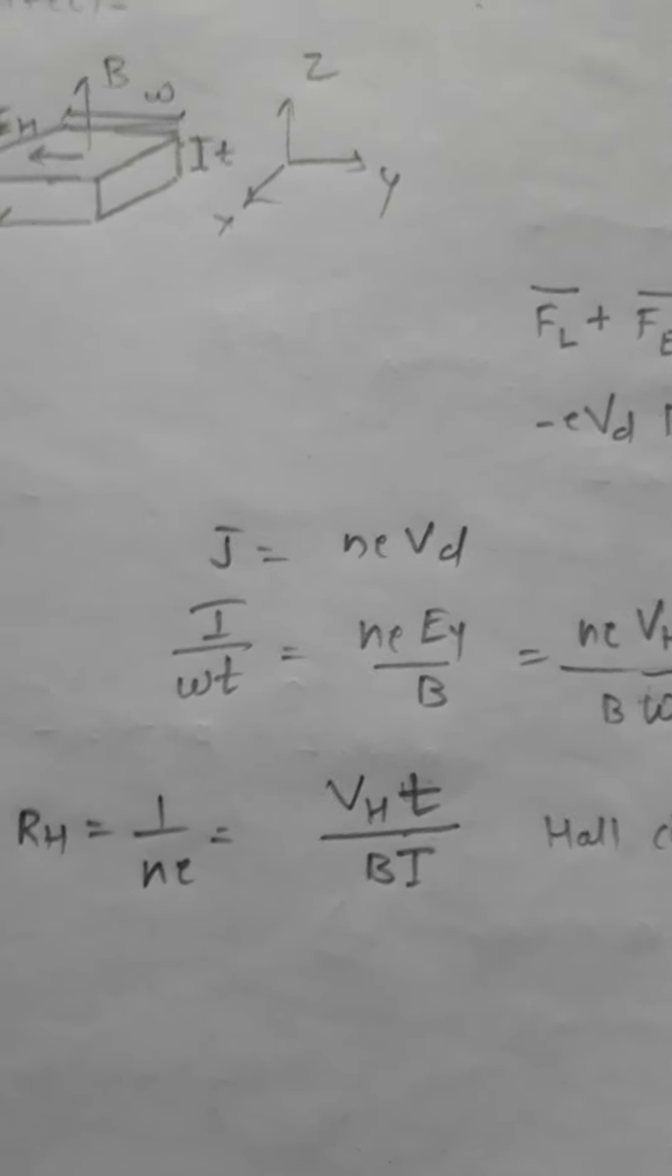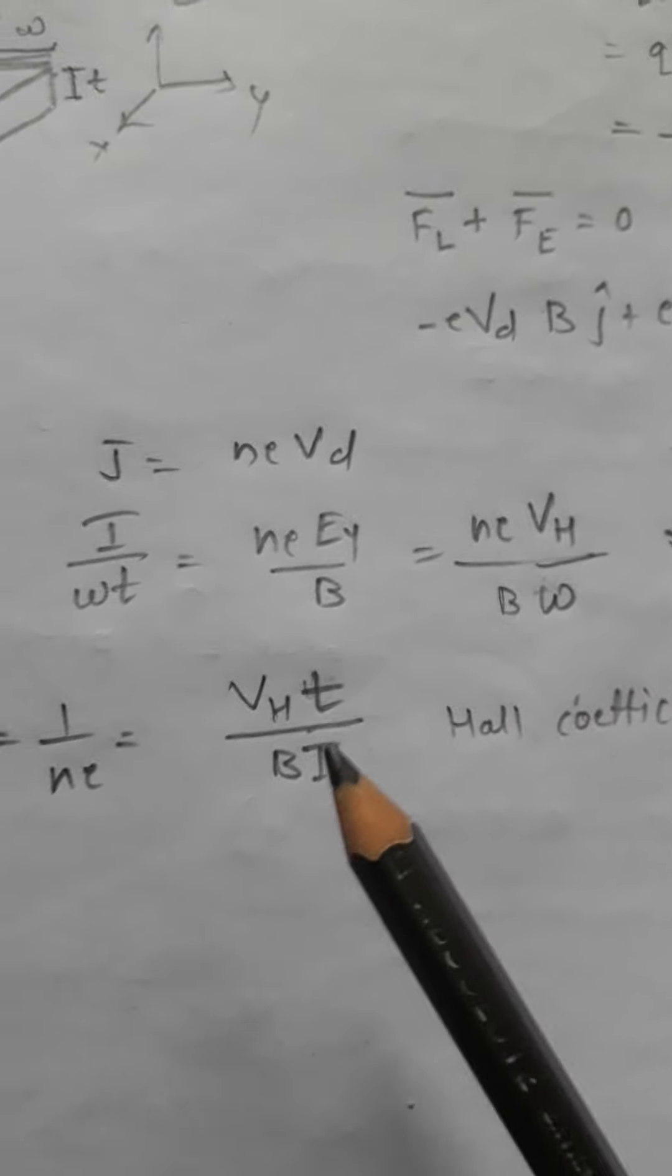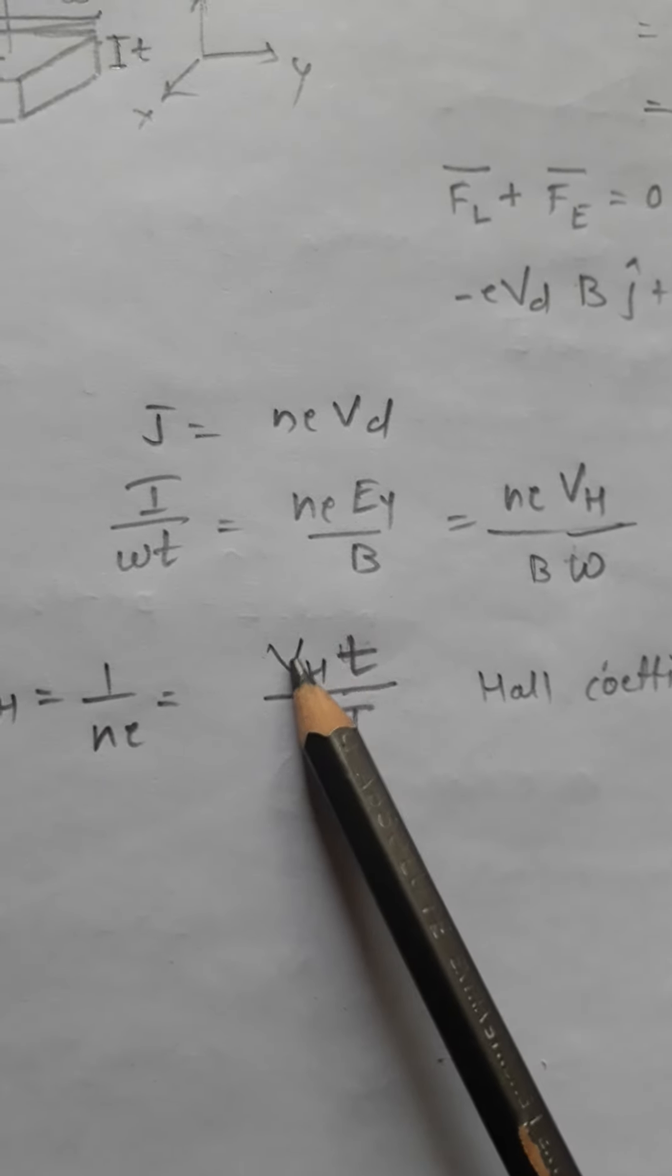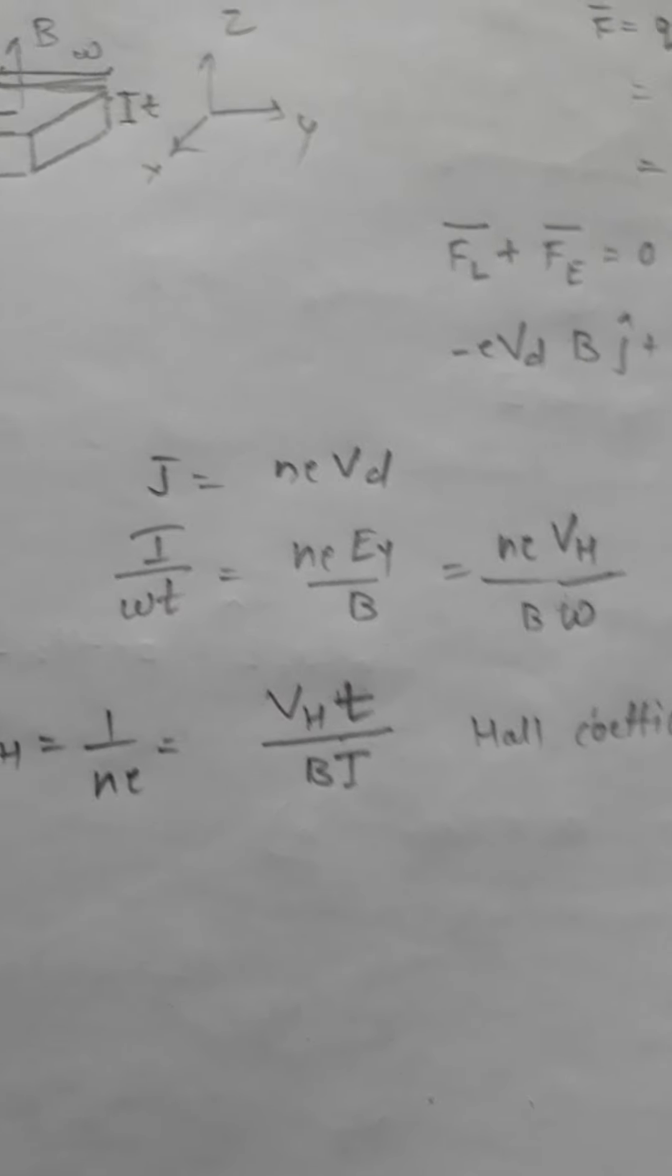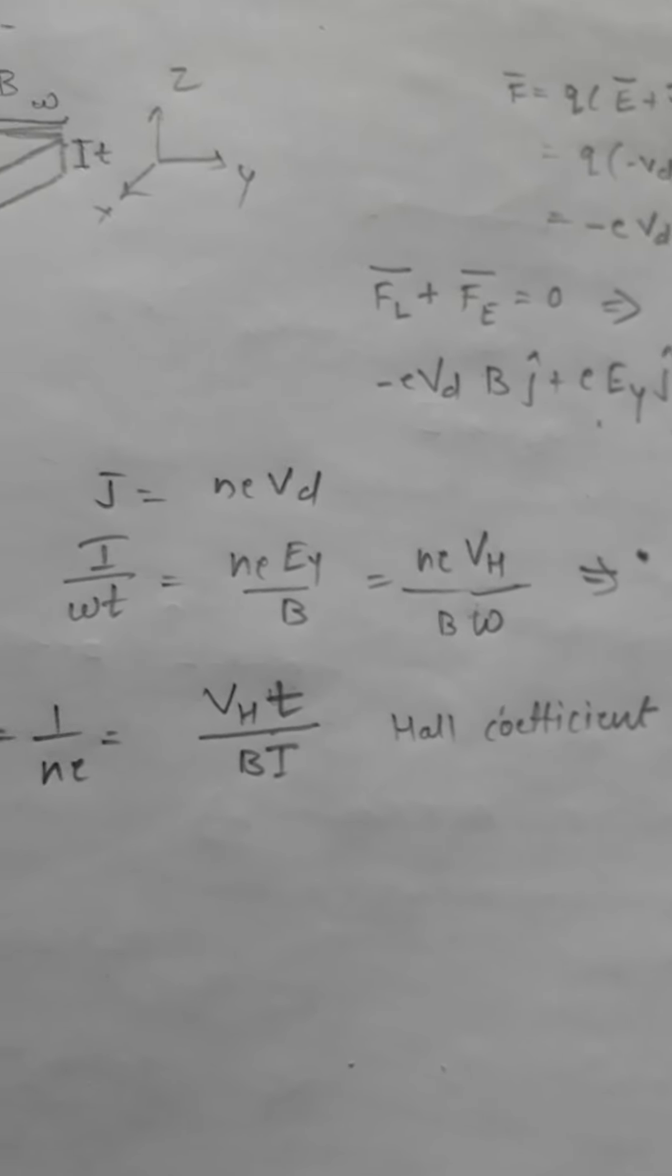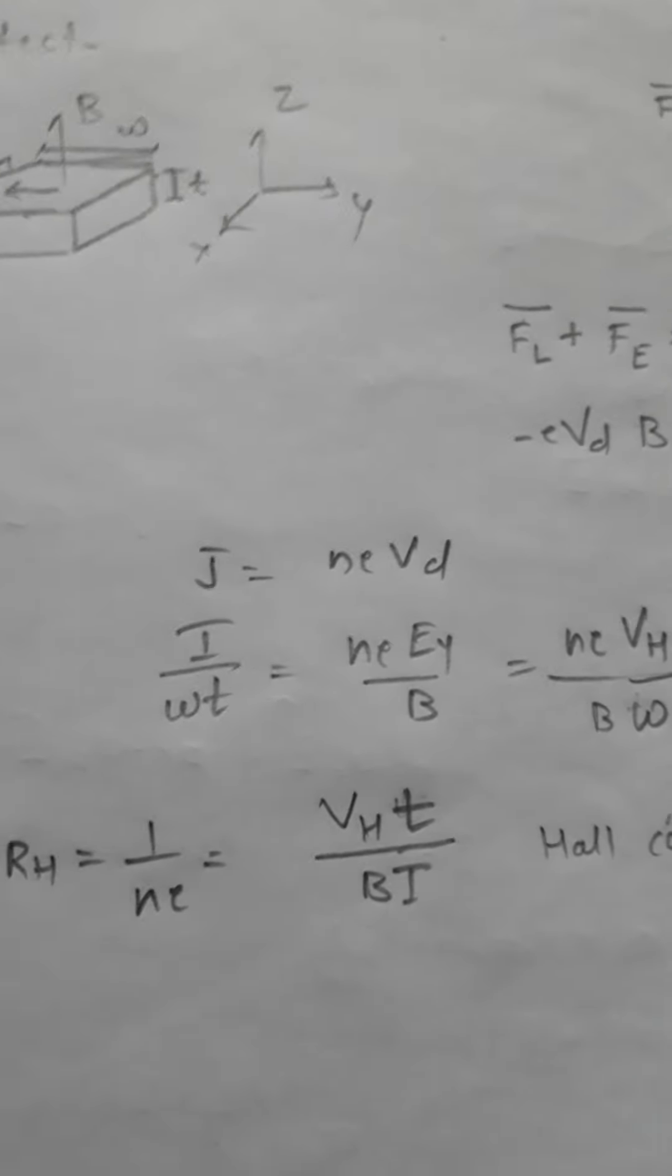We can also use this as Hall probes. Since VH is proportional to B when we pull all the other terms to the right-hand side, the Hall field is proportional to the magnetic field. So we can use this for measurement of magnetic field.